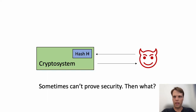Imagine we have some cryptosystem that makes use of a hash function H. Unfortunately, no matter how hard we try, we cannot prove security based on typical properties of H, such as collision resistance. Nevertheless, the scheme seems to resist attacks — so what do we do?